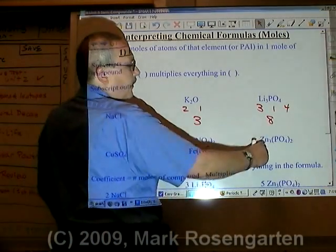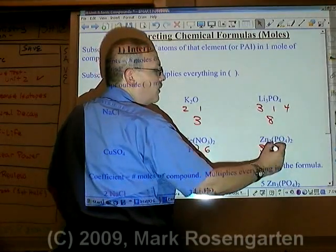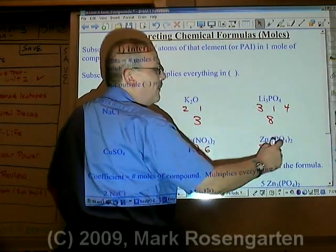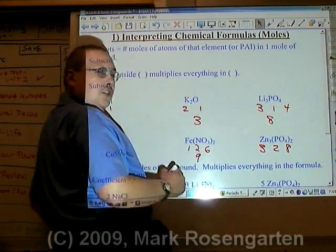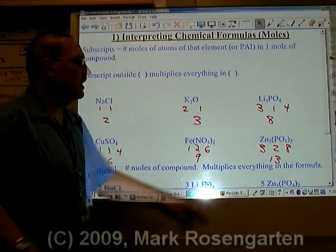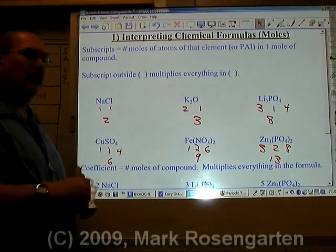In zinc phosphate, there are three zincs, there are two phosphoruses, and there are two times four is eight oxygens for a total of thirteen atoms per formula unit of zinc phosphate.